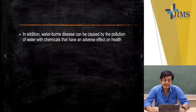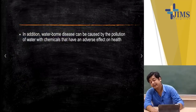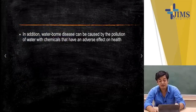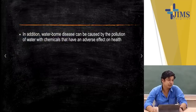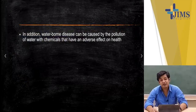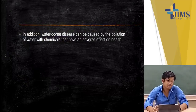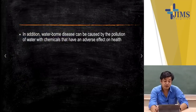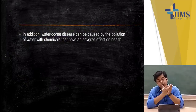Waterborne diseases can also be caused by chemical pollution of water, which has an adverse effect on human health. Industries dump their liquid waste products into rivers, polluting them. If pollution levels are too high, the fish in the river die. People dependent on river water for drinking, bathing, or washing clothes are also getting exposed to harmful chemicals — drinking or cooking with such contaminated water is disastrous for health.